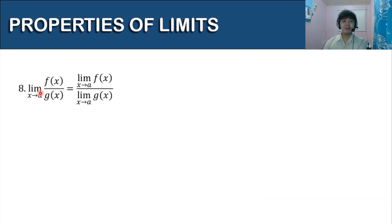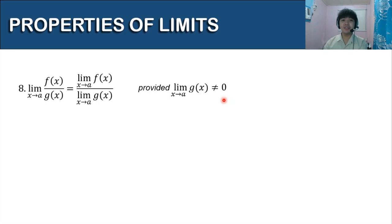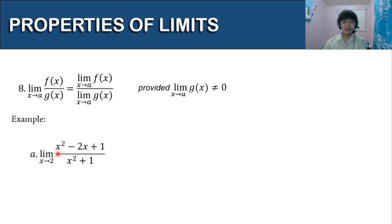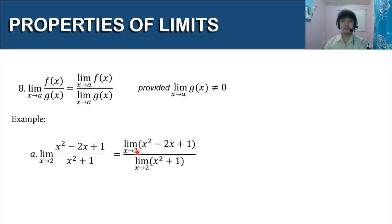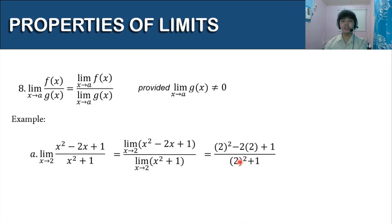For our eighth property: the limit of f(x) over g(x) as x approaches a equals the limit of f(x) over the limit of g(x), provided that the limit of g(x) is not equal to 0, because having 0 in the denominator makes the expression undefined. For example, the limit of (x squared minus 2x plus 1) over (x squared plus 1) as x approaches 2 — substitute to get (4 minus 4 plus 1) over (4 plus 1), which simplifies to 1/5 as our limit.